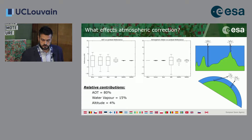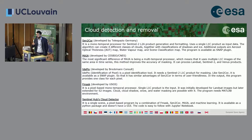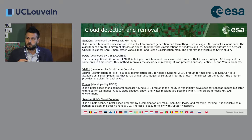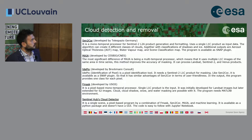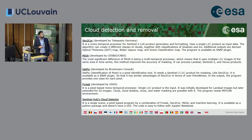For cloud detection and removal I will focus on Sen2Cor, as it is currently the official processor. The Level 2A product delivered by ESA is atmospherically corrected using Sen2Cor in the ground segment. You can also run Sen2Cor via command line or as a plugin in SNAP. The main difference between the PDGS version and the SNAP/command-line version is the DEM used: PDGS uses the PlanetDEM at 30 meters resolution, while SNAP and command-line default to SRTM at 90 meters.